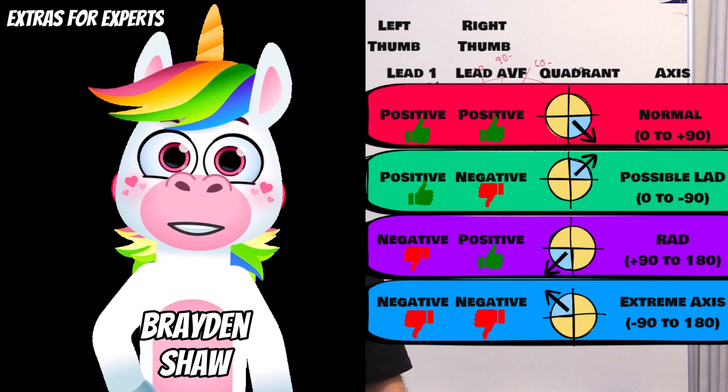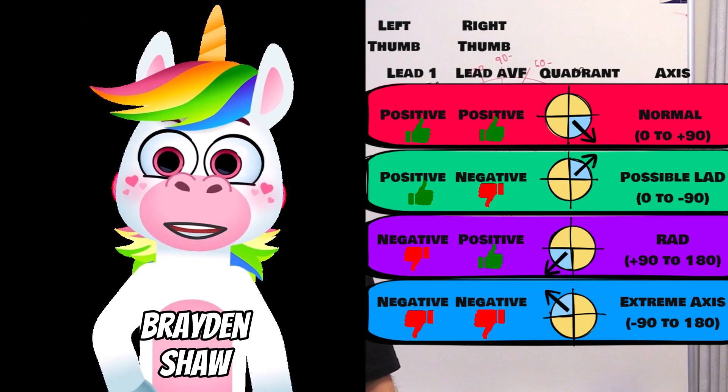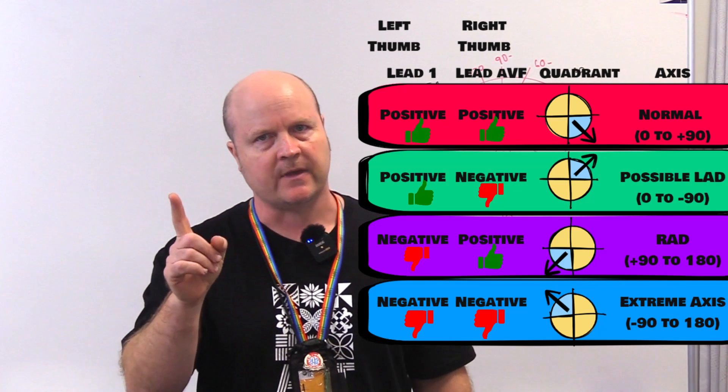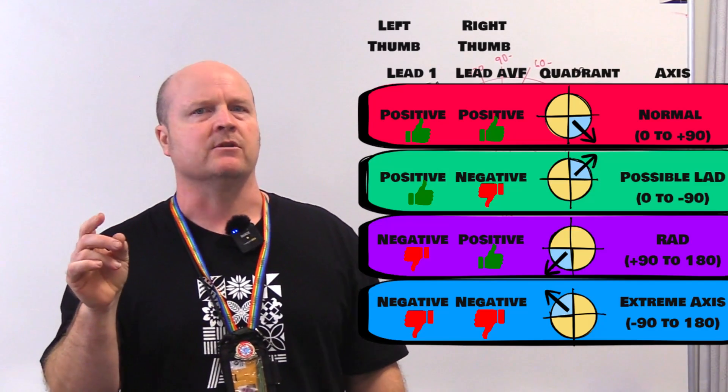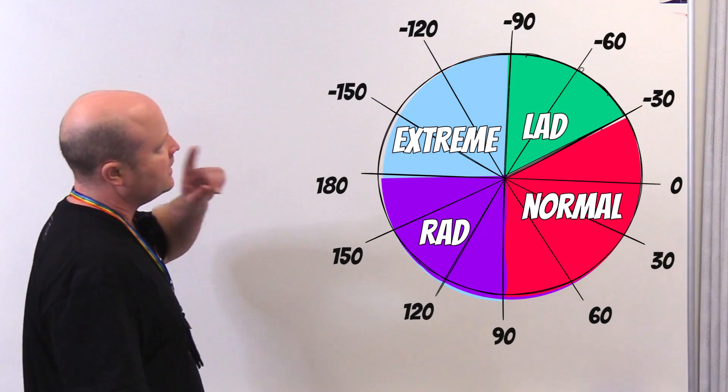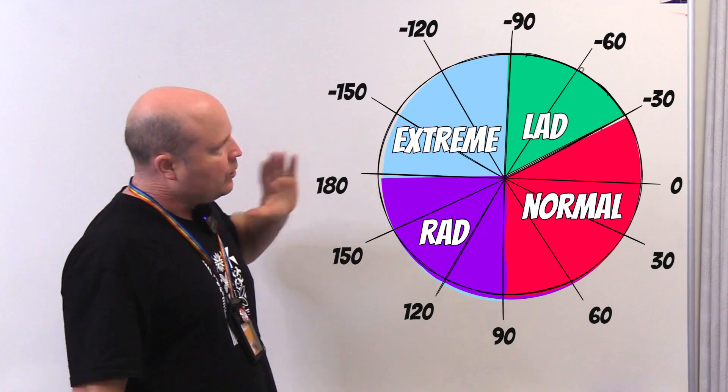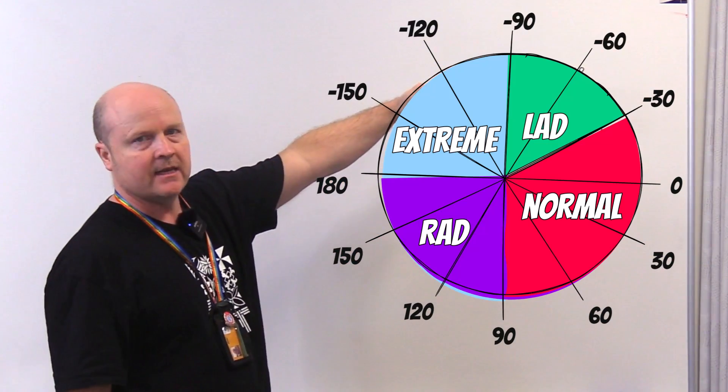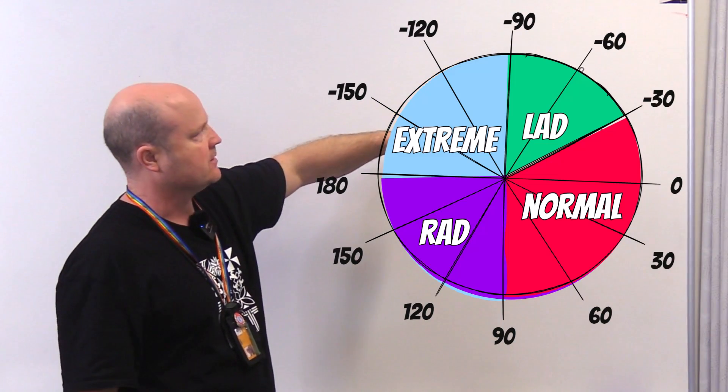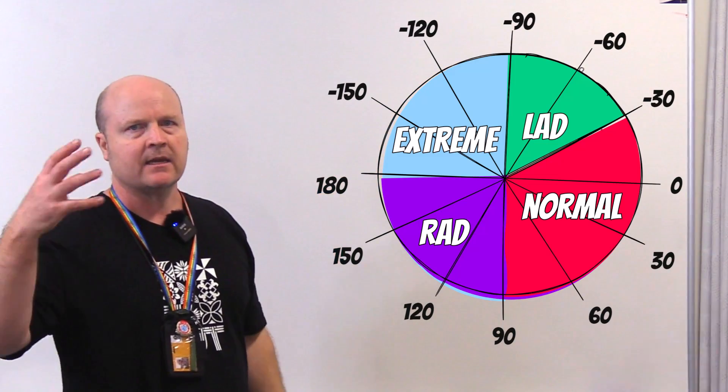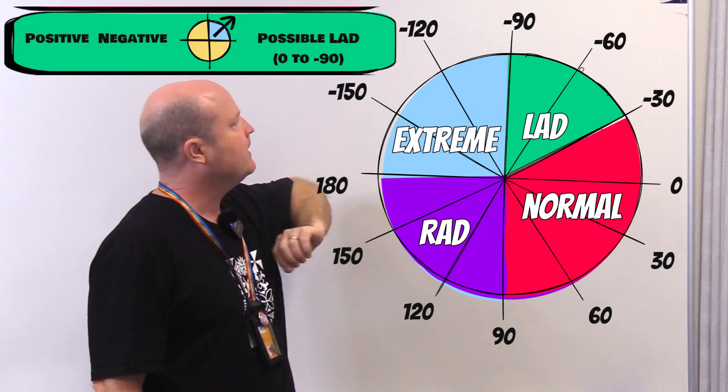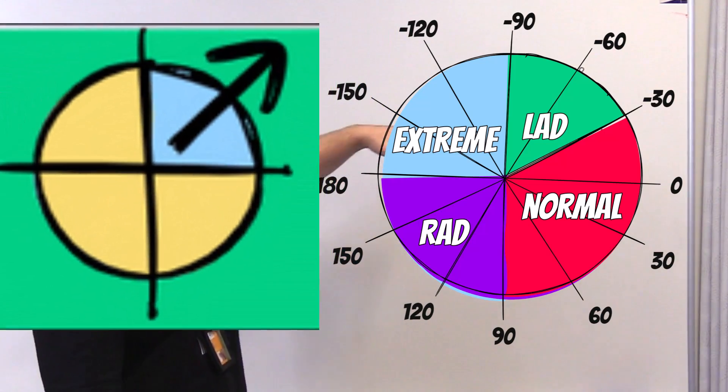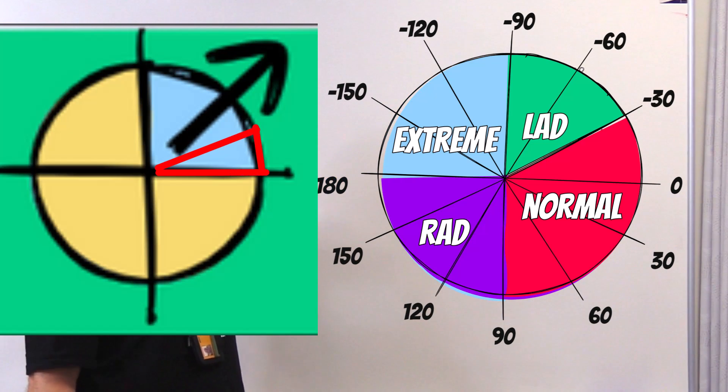Hey, Ben. You said possible left axis deviation. OK, extras for experts. So the reason we said possible left axis deviation is because if we look, our normal axis can actually go to negative 30 to positive 90. So when we're calculating that way, and we've got possible left axis deviation, then we're also including that zero to negative 30. So it could still be normal if it hit that wedge.